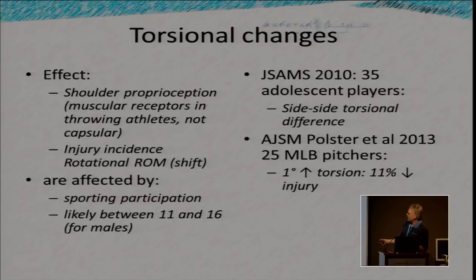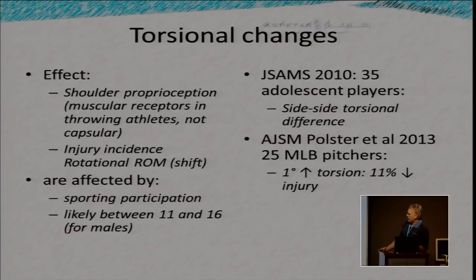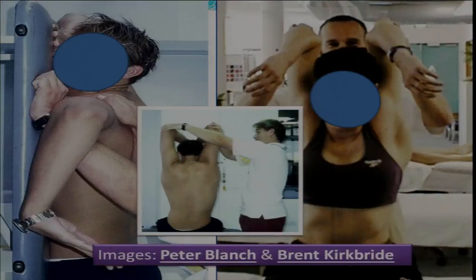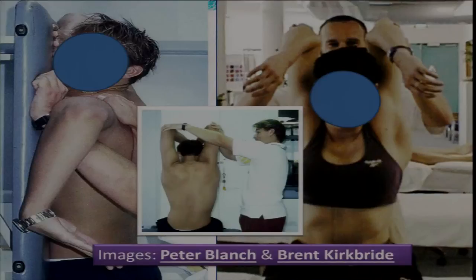In a much better paper, Mark Schickendantz's group at Cleveland Indians followed 25 Major League Baseball players and found that for every extra degree of retro-torsion, there was a one-in-nine reduction in injury lasting over 30 days. You can change this through the kinds of sports you play — for males you probably need to do a lot of throwing between ages 11 and 16 to get this protective effect. For sports that force the arm to the other extreme, those athletes display extreme ranges of motion in the opposite direction, partly due to the twist in the humerus.